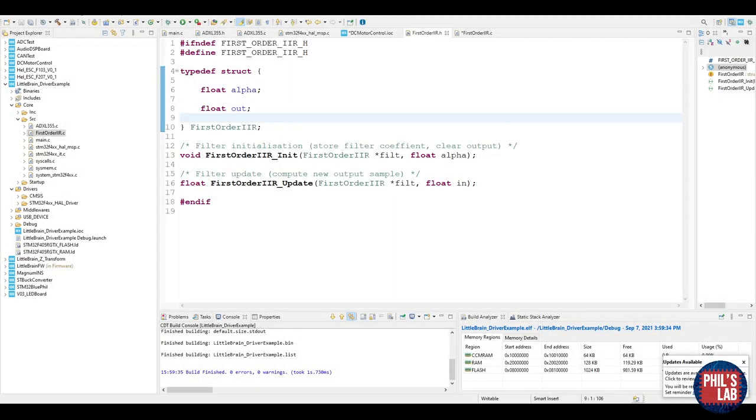So here we are in the STM32 Cube IDE development environment and from the previous video where we wrote a driver for an ADXL355 accelerometer I'll be using the code. Essentially from that video all I got was the raw accelerometer readings x, y and z axes and I would like to perform some low pass filtering using our IIR filter.